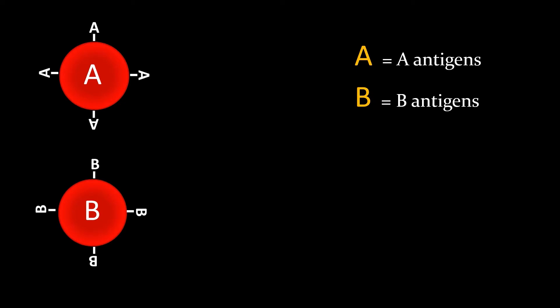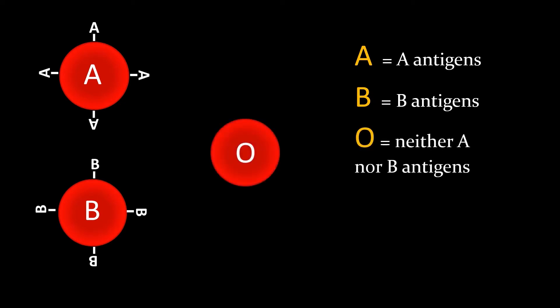When a person has O type, that means they do not have A or B antigens.